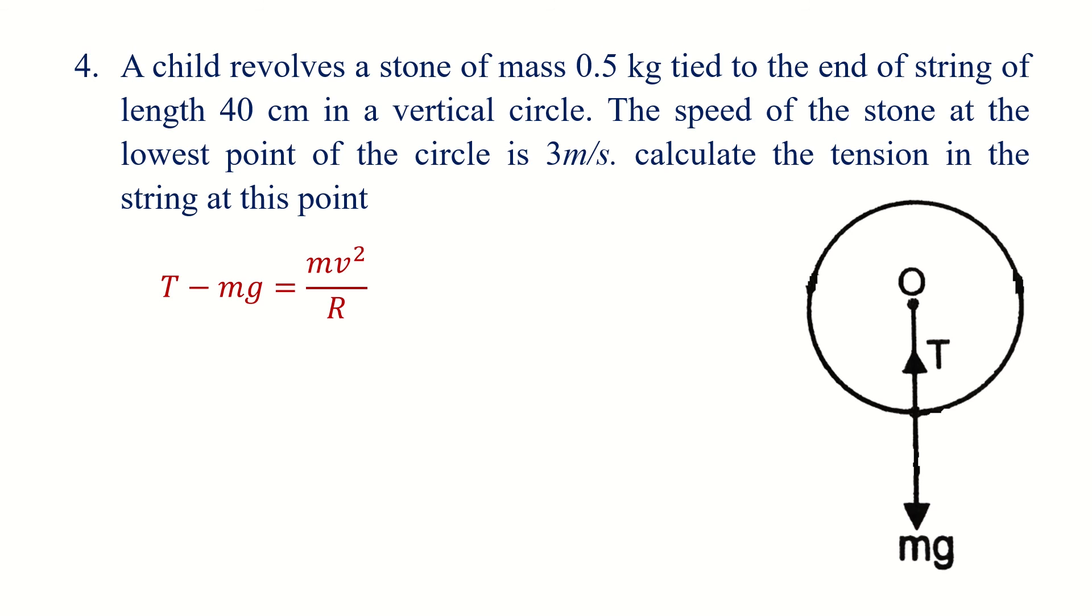So T equals mv²/R in the direction minus mg. We want to find the tension, so T equals mg plus mv²/R, which is m times (g plus v²/R).